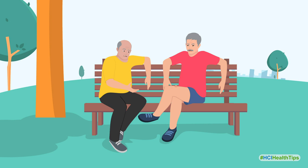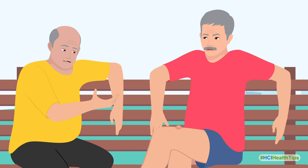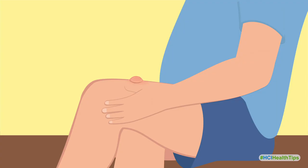Rosario asks what this lump is. Danny explains that it is the injection mark of insulin. Rosario looks surprised and inquires if Danny is taking the injection on the same side daily.